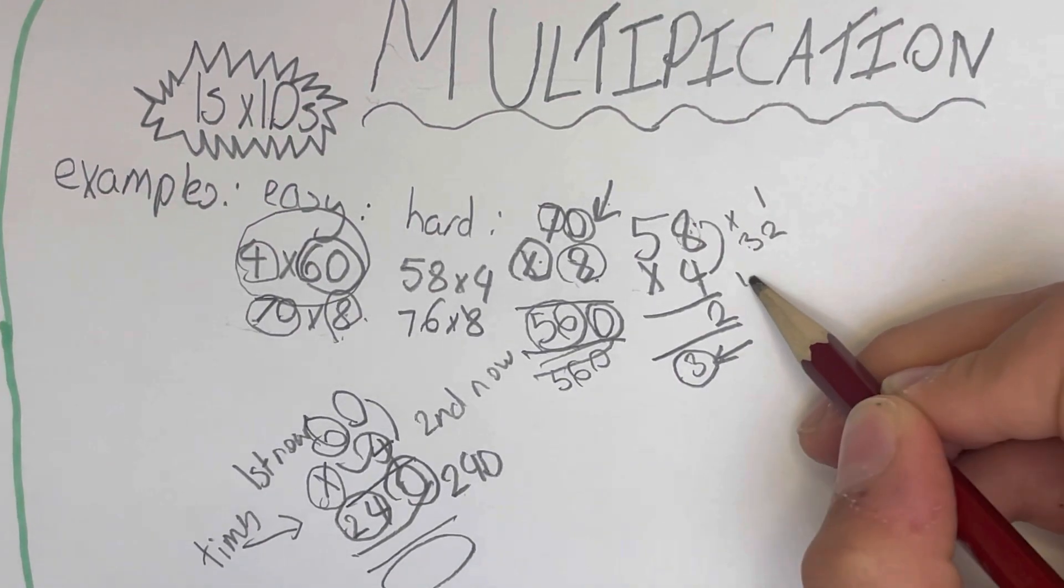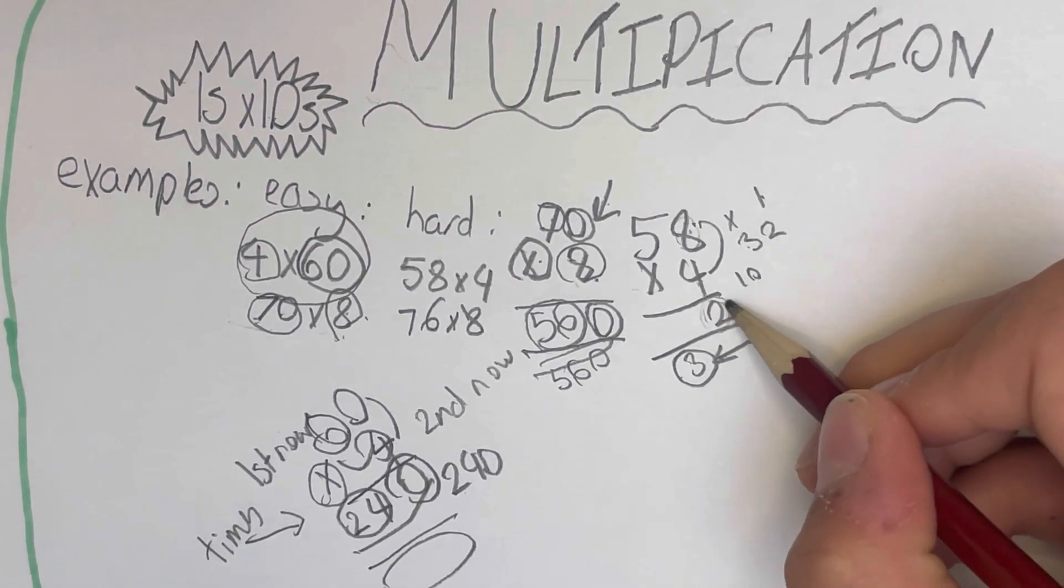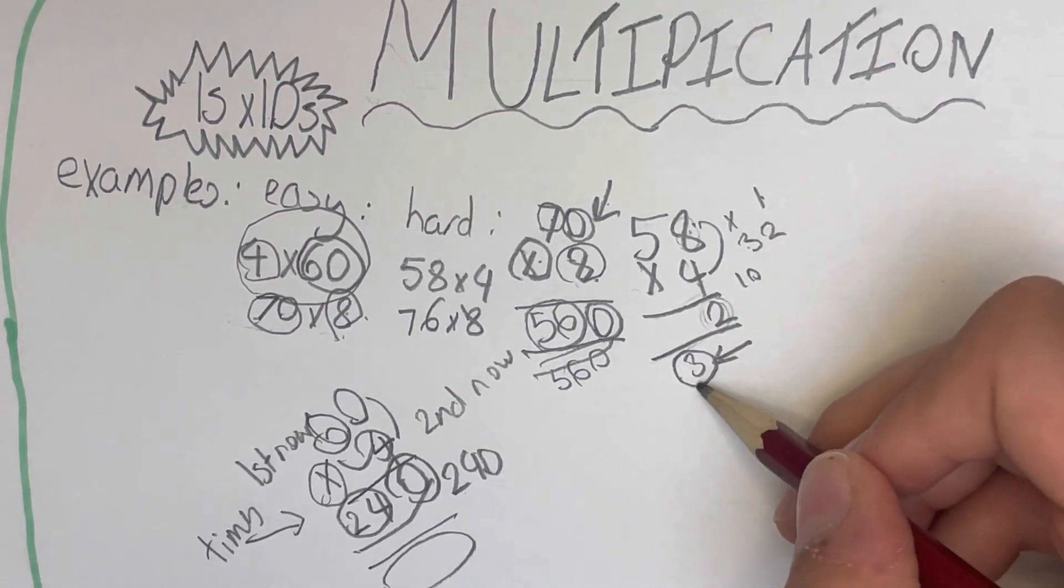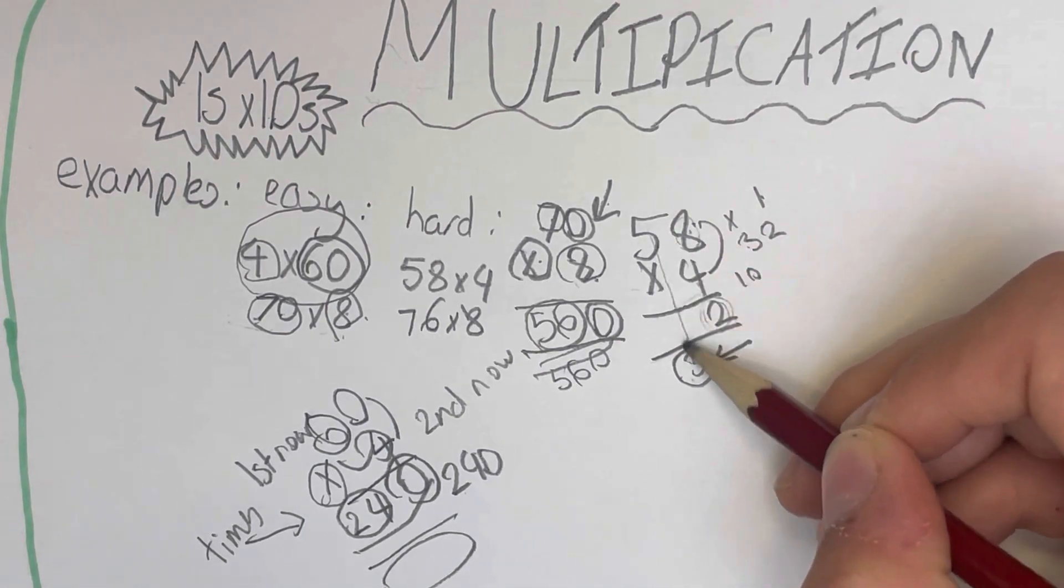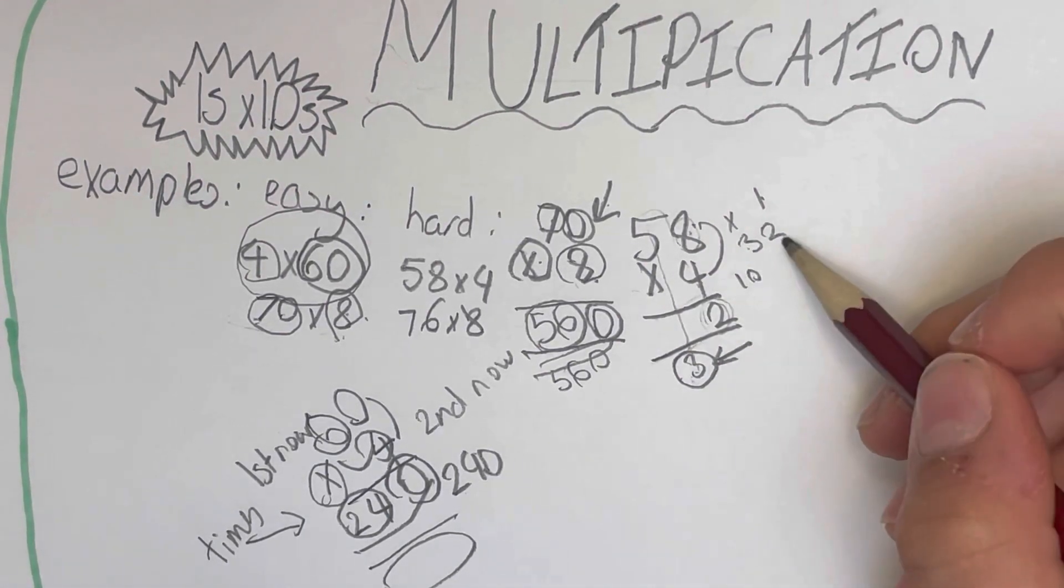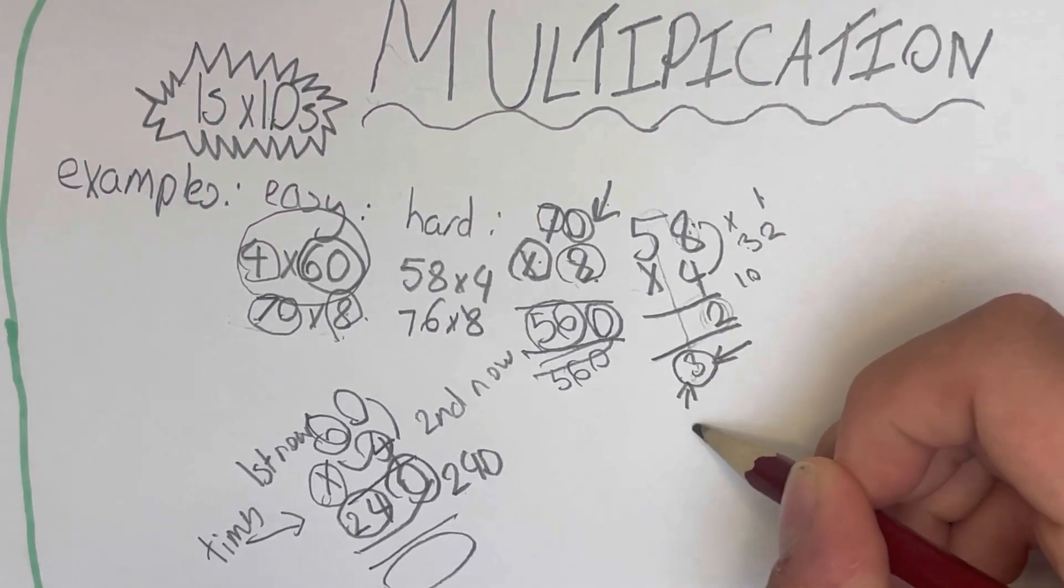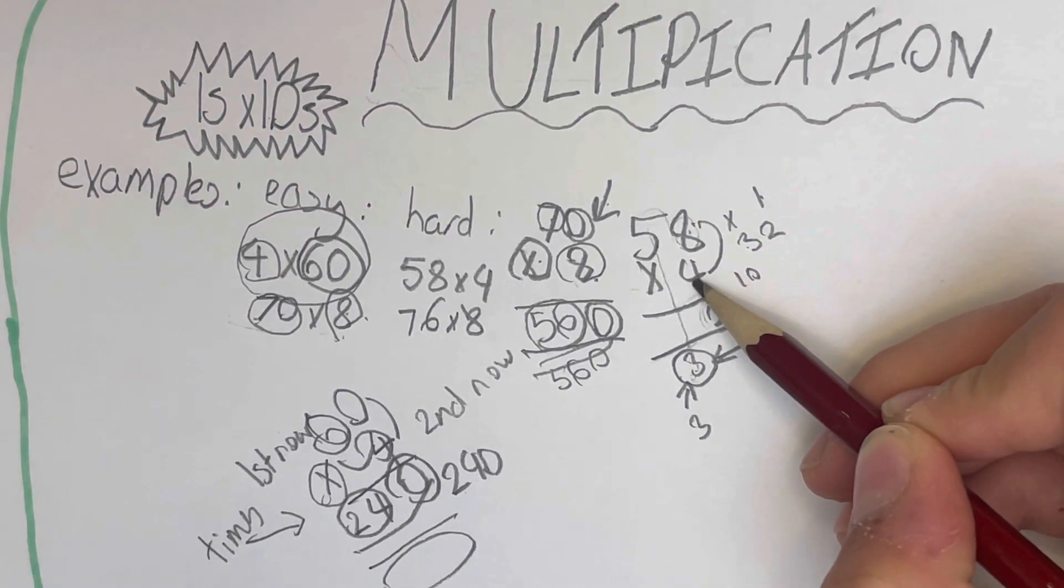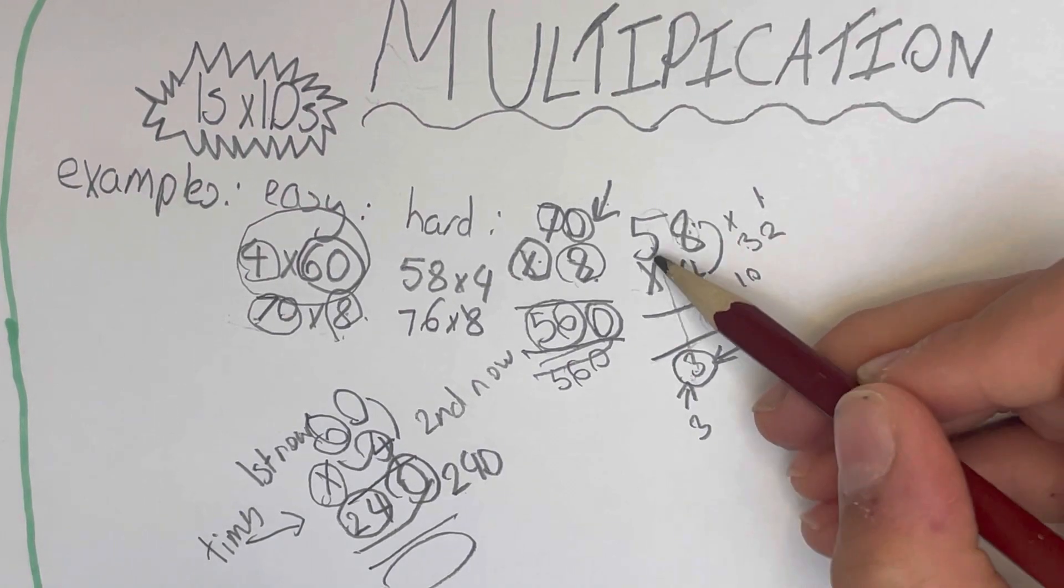We know this is the ones column and this is the tens column. So we put the ones column in here in the bar over here, and then we put the 3 underneath under this tens column, just there. So we do this so we can add this number 3 to whatever this number times by the tens column is.